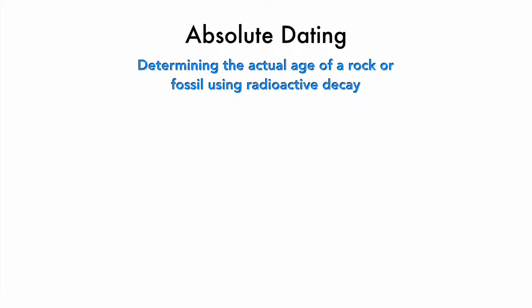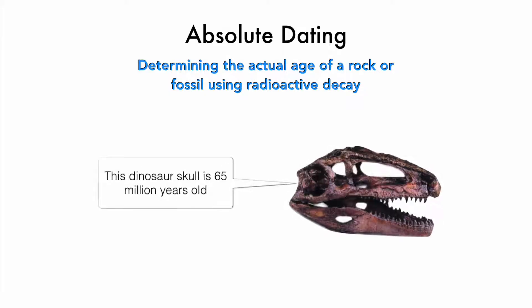Absolute dating is determining the actual age of a rock or fossil using radioactive decay. Say I had a dinosaur fossil and I used radioactive decay, I could say that this dinosaur skull is 65 million years ago. That's absolute dating, giving something an exact number.